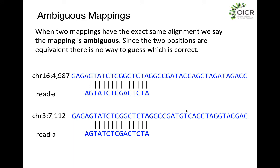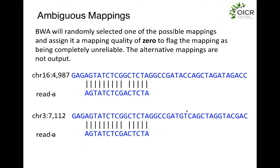There are cases where a read matches the reference genome at two positions with exactly the same mapping quality. In these cases, there's no way to resolve which position is true. The BWA aligner will pick one at random but assign it a mapping quality of zero, because it's totally ambiguous — you have no idea where it should go and can't infer any information from it.